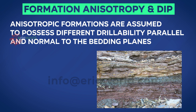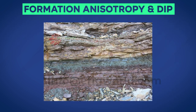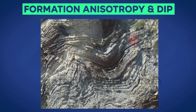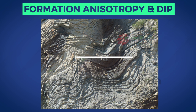Let's learn what formation anisotropy and formation dip are. Anisotropic formations are assumed to possess different drillability parallel and normal to the bedding planes, as shown — anisotropic formations having different drillability in parallel planes, including hard and soft dipping formations. Dipping formation and dip angles can be understood if a straight horizontal line is drawn on the dipping formation, and we measure the angle of dip — for example, 30 degrees.